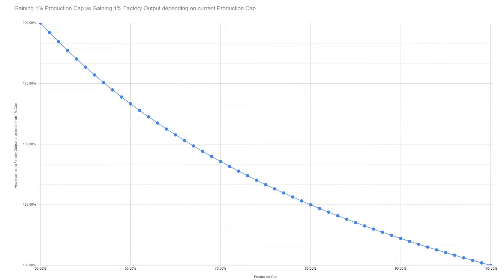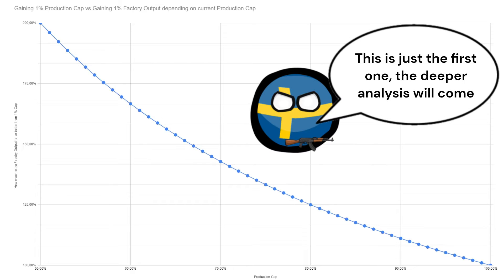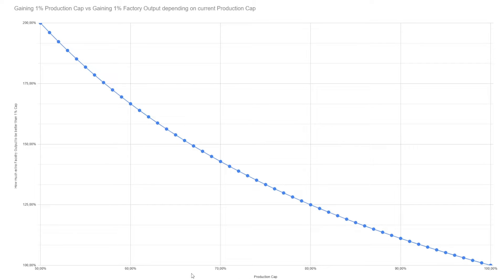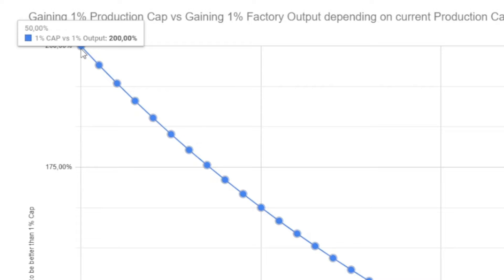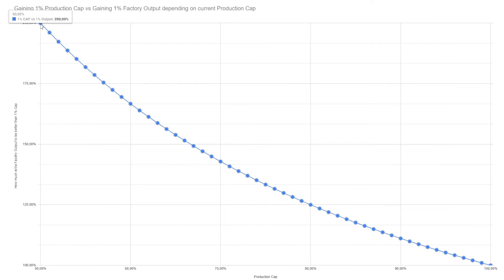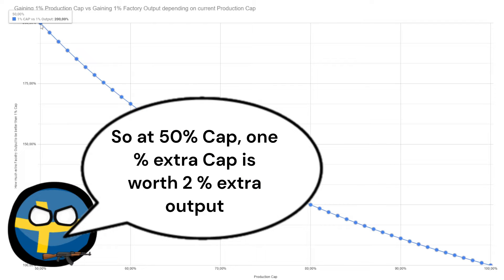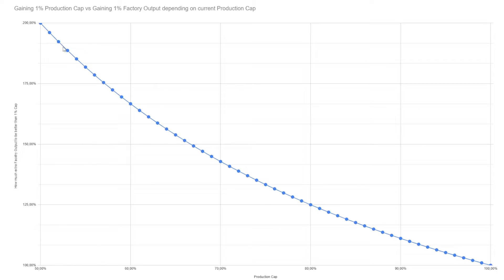Here we have the first graph. The graph shows how much more it's worth to gain 1% production efficiency cap versus gaining 1% factory output. As you see here, it's dependent on how much production cap you already have, since production cap is worth more when you're going from 50% to 51% than at the end by going from 99% to 100%. So in the beginning, gaining 1% production efficiency cap is worth twice as much as gaining 1% factory output. So if you have a choice and you gain 5% production efficiency cap, that's worth as much as gaining 10% in factory output. But we have a lowering amount for each percent cap you have.